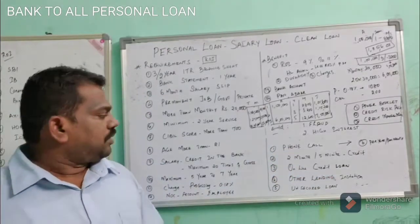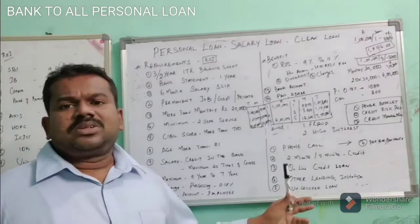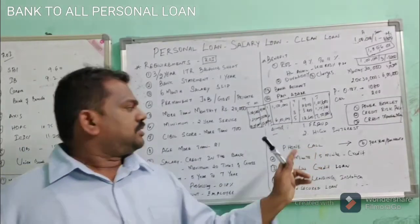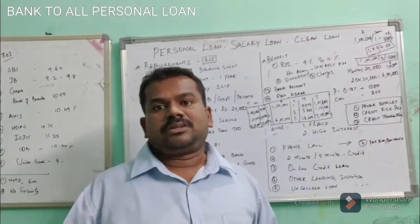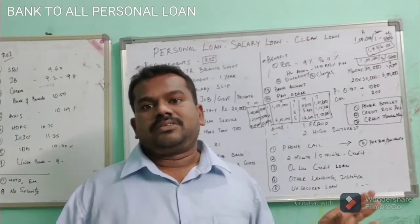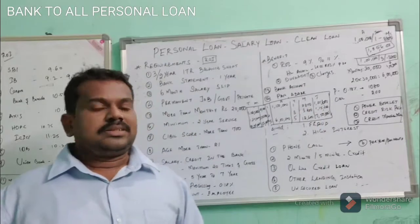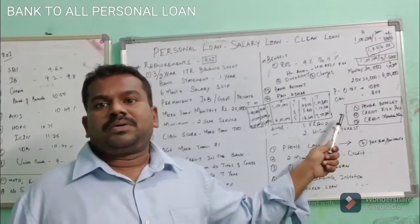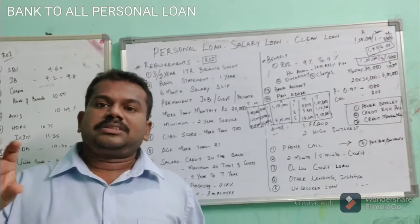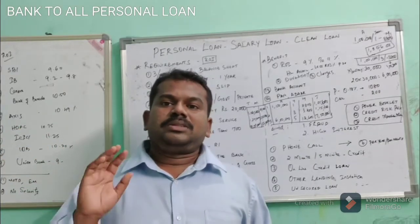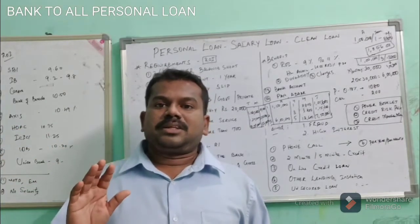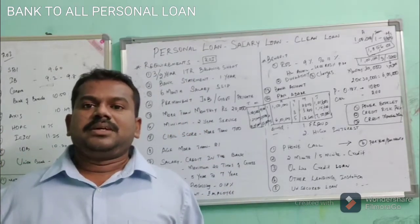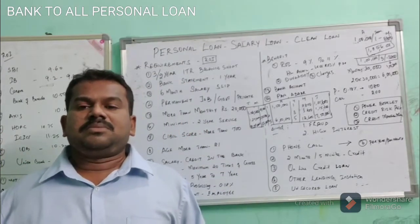Nowadays many people say 'two-minute loan' or offer personal loans through phone calls or online. There are a lot of lending institutions offering unsecured loans. These must be either fraudulent or carry a higher rate of interest. Any bank has to follow three things: one is the power booklet — each bank has its own lending power structure, from assistant manager up to general manager.